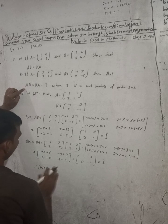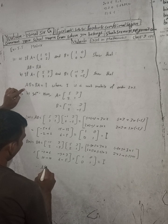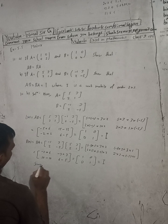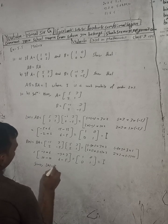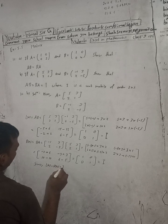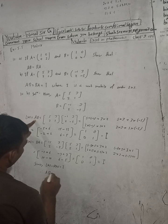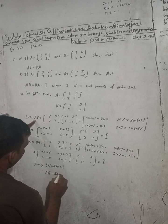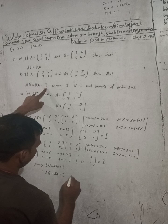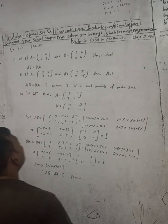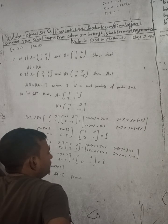Therefore AB equals BA equals I. This is true. Dear subscribers, viewers and students, this is the complete solution. Please let me know from where you are watching this video so I can understand whether my goal of making videos is being fulfilled.